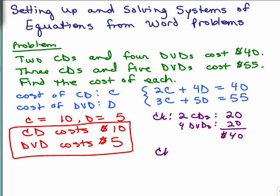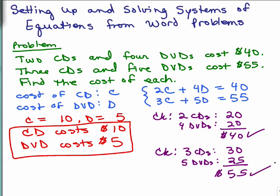Let's also check the second part. It says 3 CDs and 5 DVDs cost $55. So 3 CDs, $10 each, that would be $30 and also 5 DVDs, $5 each. That would be $25. That adds up to $55. So you know what? Our solution of a CD costing $10 and a DVD costing $5 does meet the original criteria.